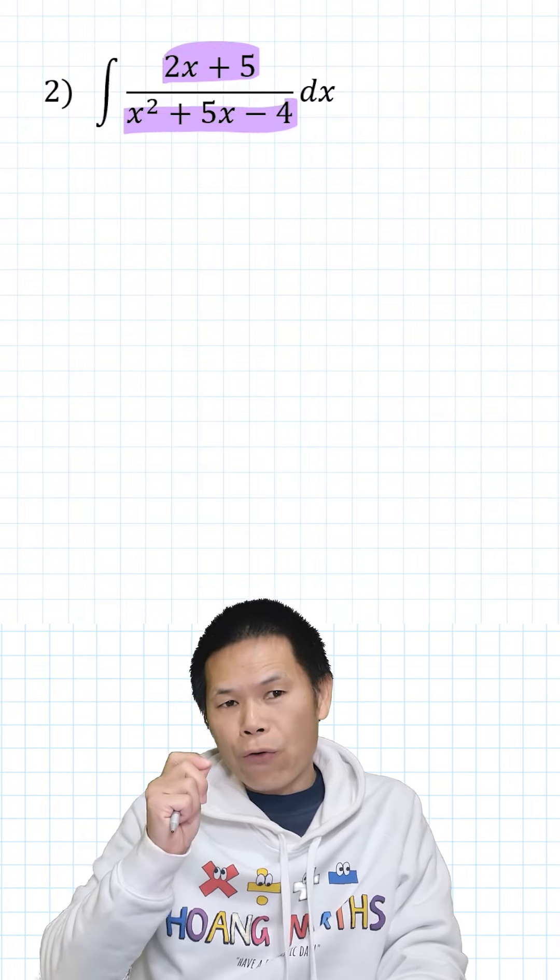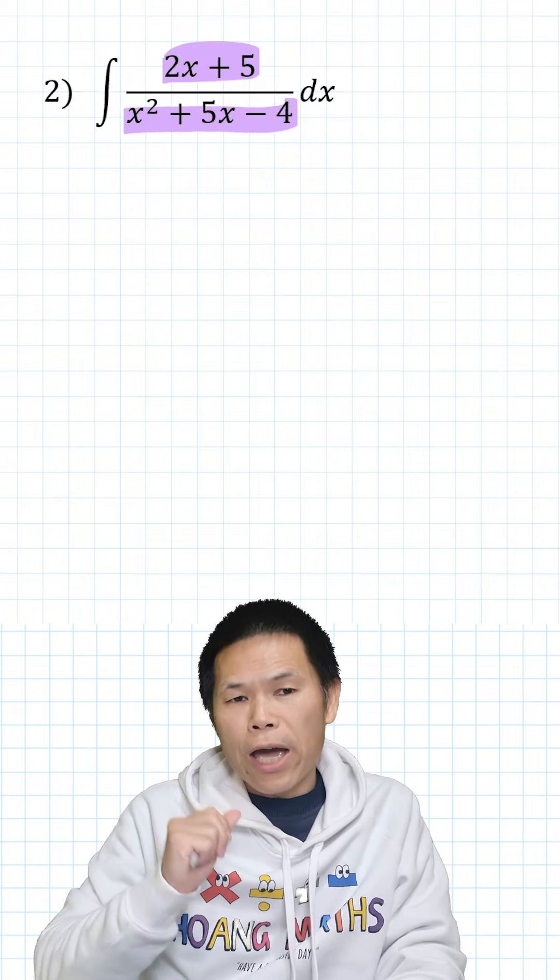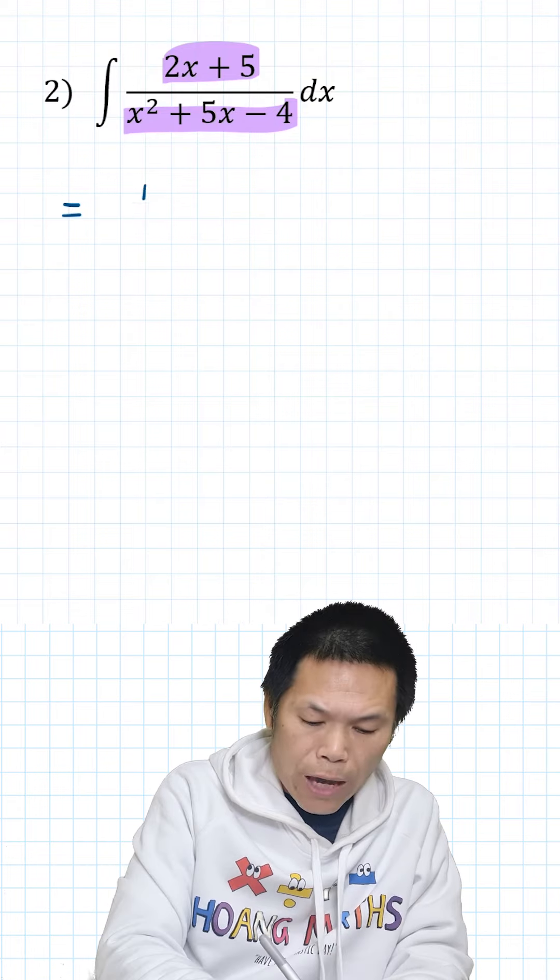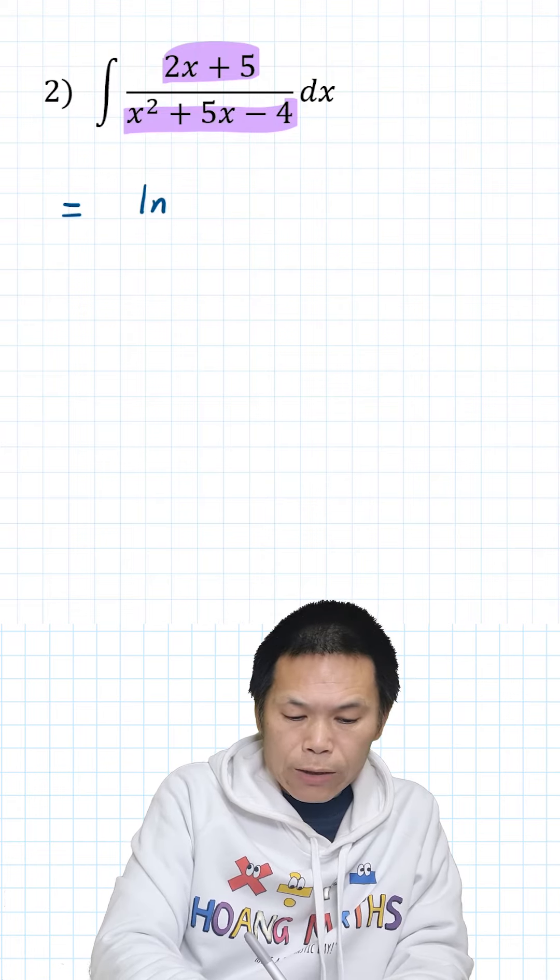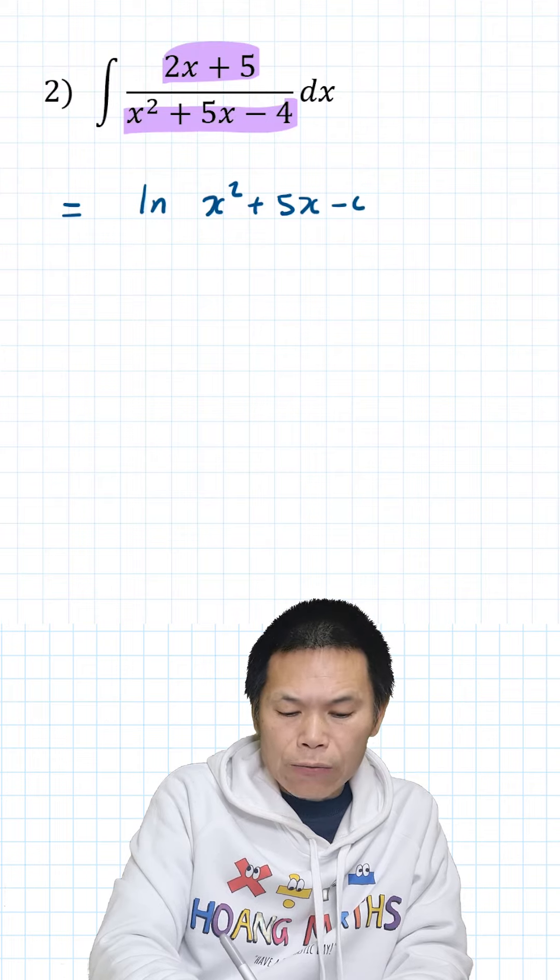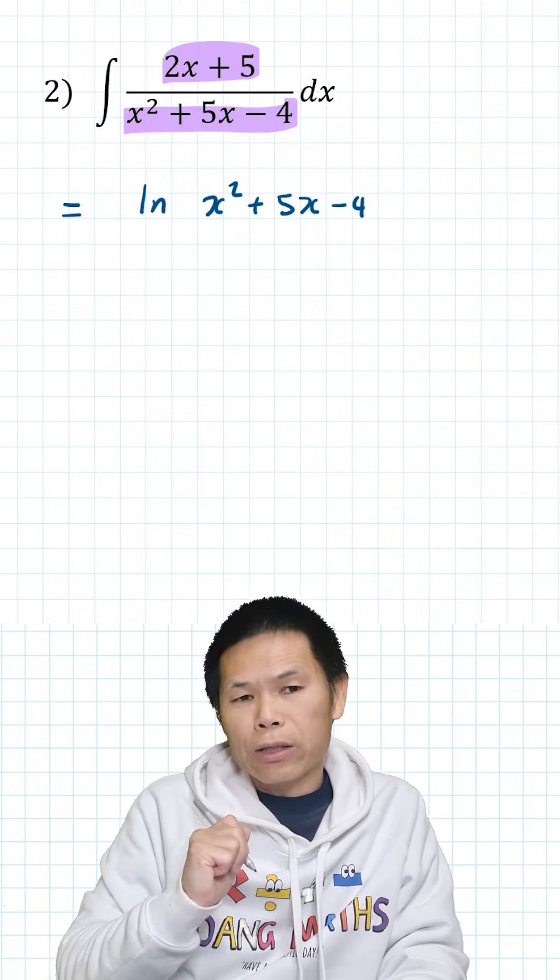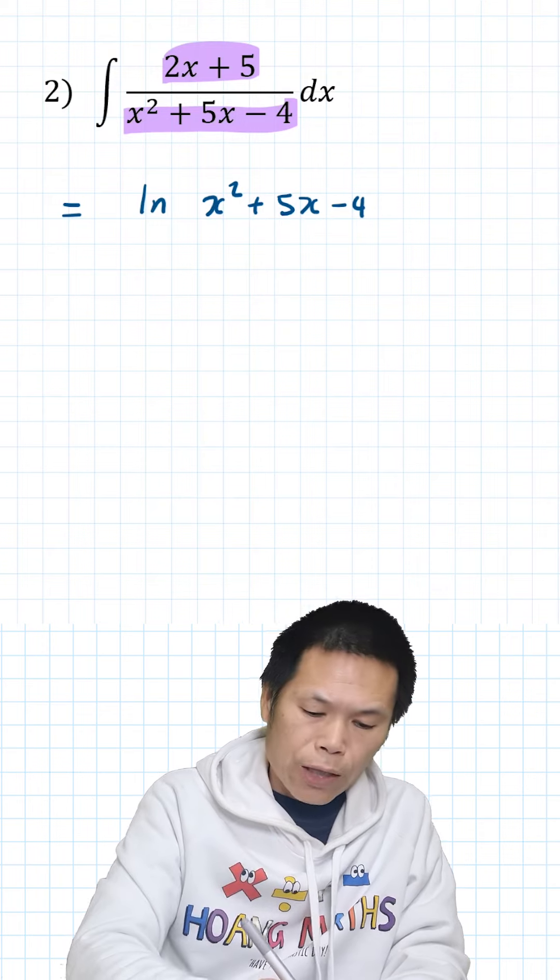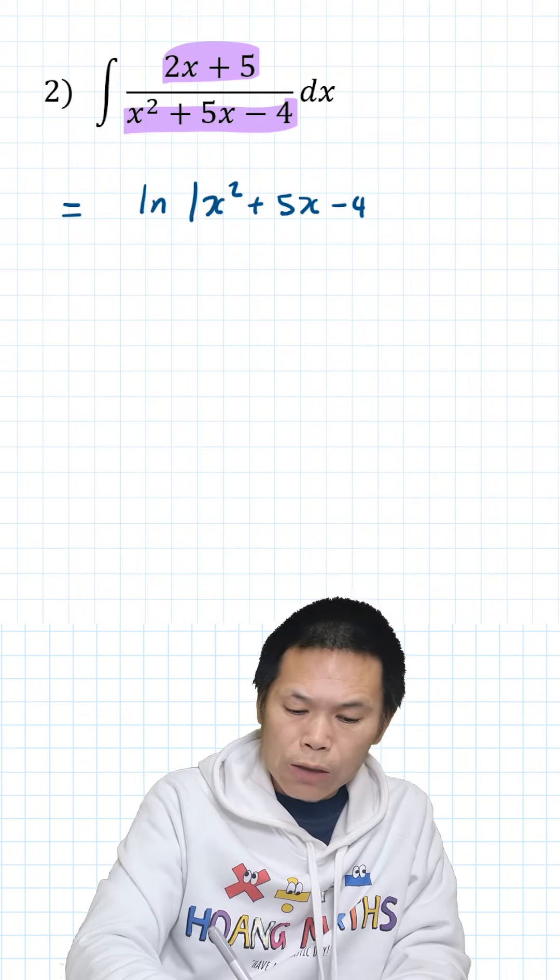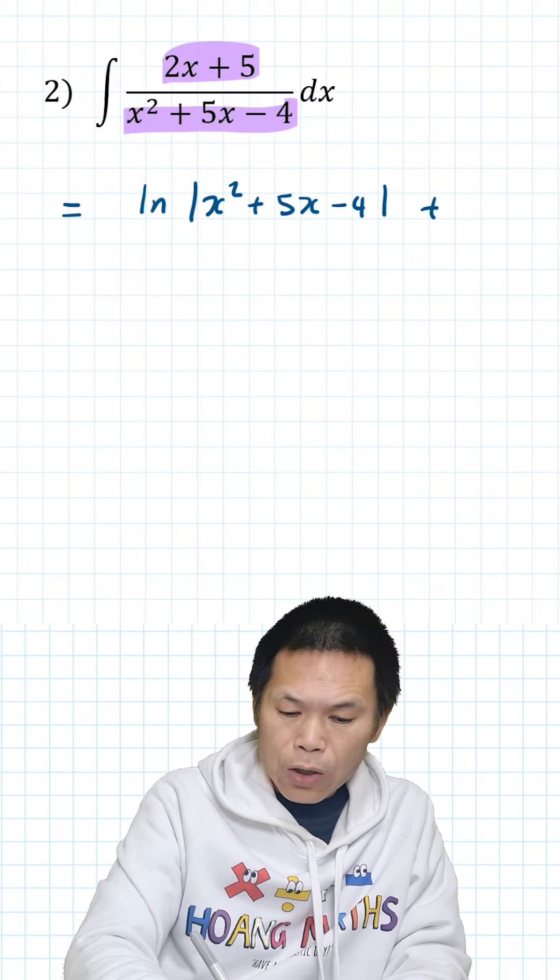So therefore, if we integrate f dash x over f of x, it will give me ln of f of x. So f of x is x squared plus 5x minus 4, and don't forget we cannot take log of a negative number, so therefore we just make sure this is positive, and then we add a constant c.